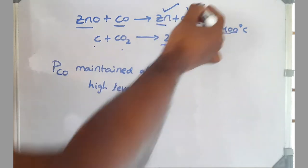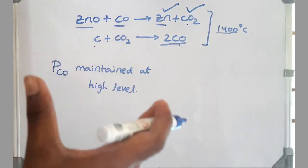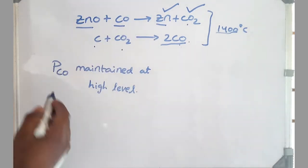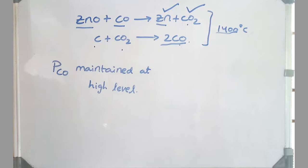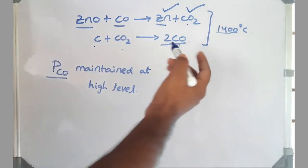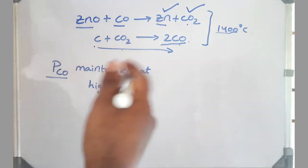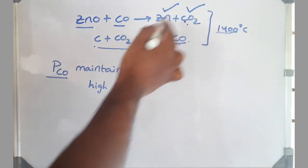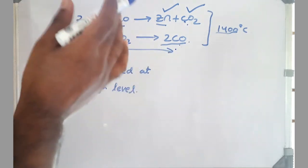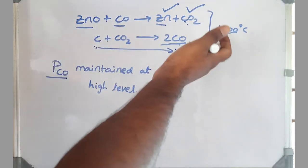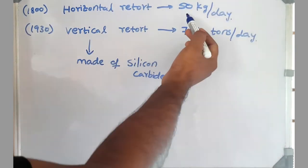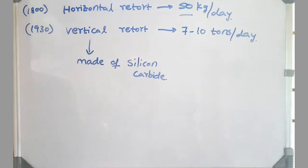But here we often face the problem: zinc is also gas, carbon dioxide is also gas, so we don't want any reverse reaction, right? Because both are gases, we need to separate them by cooling. But to avoid any possible reverse reaction, we maintain carbon monoxide partial pressure at a higher level, which means this reaction is proceeding at a faster rate. Which means whenever carbon dioxide is produced, it is being consumed by coke to form carbon monoxide, so that there is no sufficient availability of carbon dioxide to favor any reverse reaction. Friends, horizontal retort gives us a production of 50 kg per day.